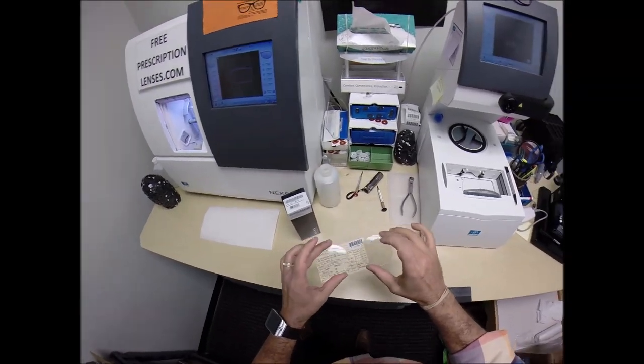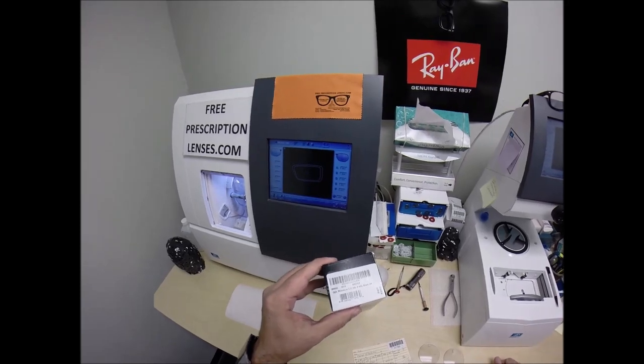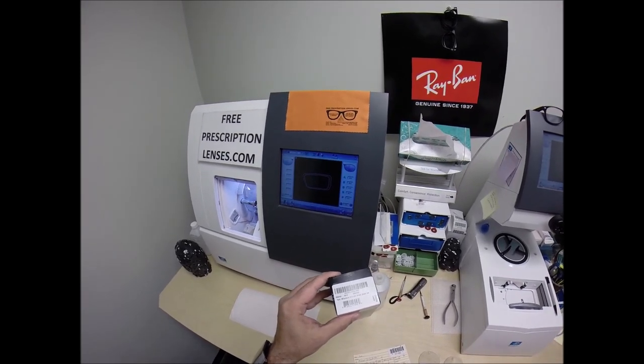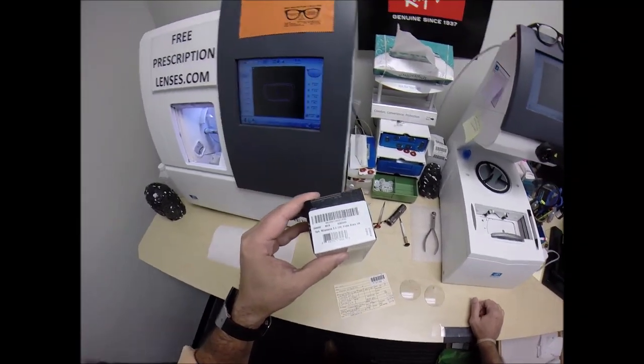It's a digital freeform progressive lens with transitions gray for your Oakley 8093, which is the Milestone 3.0, the 49 eye size, and the color 02, which is the matte black ink.